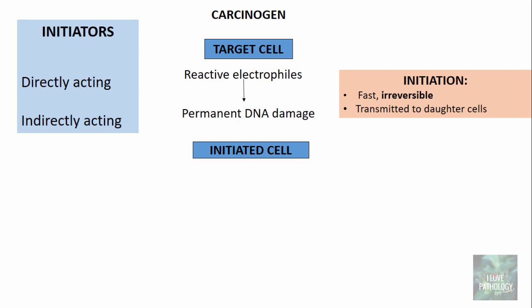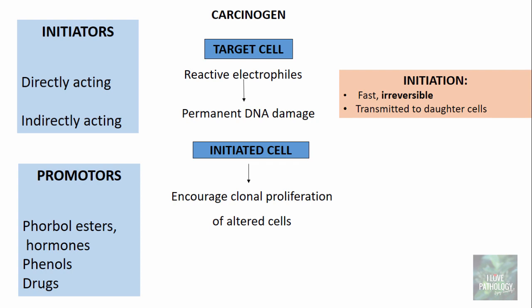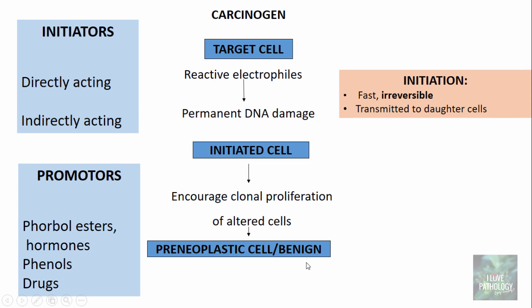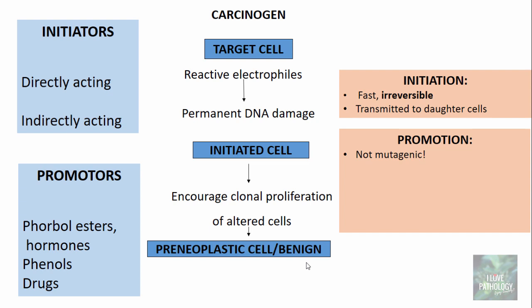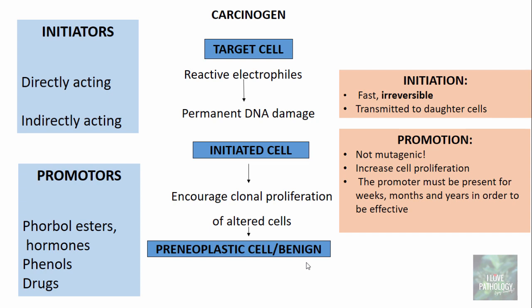With the help of promoters, there will be clonal proliferation of these initiated cells. Promoters are phorbol esters, hormones, phenols, and drugs. They encourage clonal proliferation of altered cells, which are now preneoplastic or benign cells — this whole process is called promotion. The promotion step is not mutagenic; it only increases cell proliferation. The promoter must be present for a longer duration — weeks, months, or years — to be effective, and this step is always reversible.